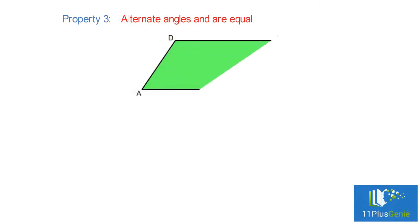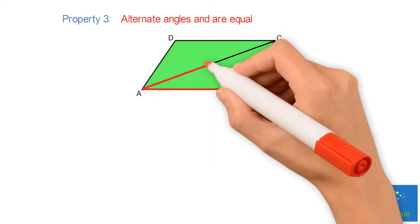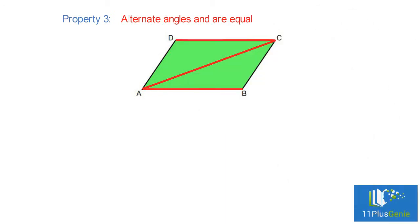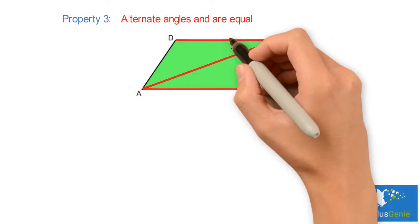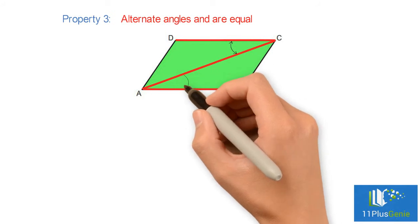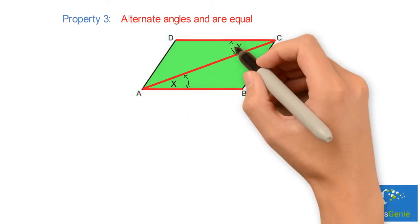Number three: if we have a parallelogram with a diagonal drawn, the two opposite sides and the diagonal form a Z. The angles inside this Z are called alternate angles and they are equal. This is the Z, and these two angles are equal.